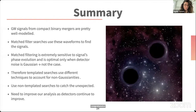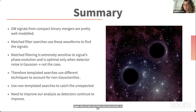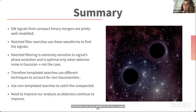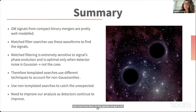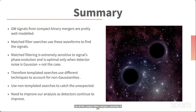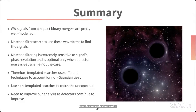Thank you, Gustav, for this very nice and comprehensive talk. A question from the chat: do all black holes spin — can compact binary mergers consist of Kerr black holes? Astrophysically, yes. If a stellar object collapses and the initial stellar object has some spin, then the formed compact object — white dwarf, black hole, or neutron star — will have an associated spin.